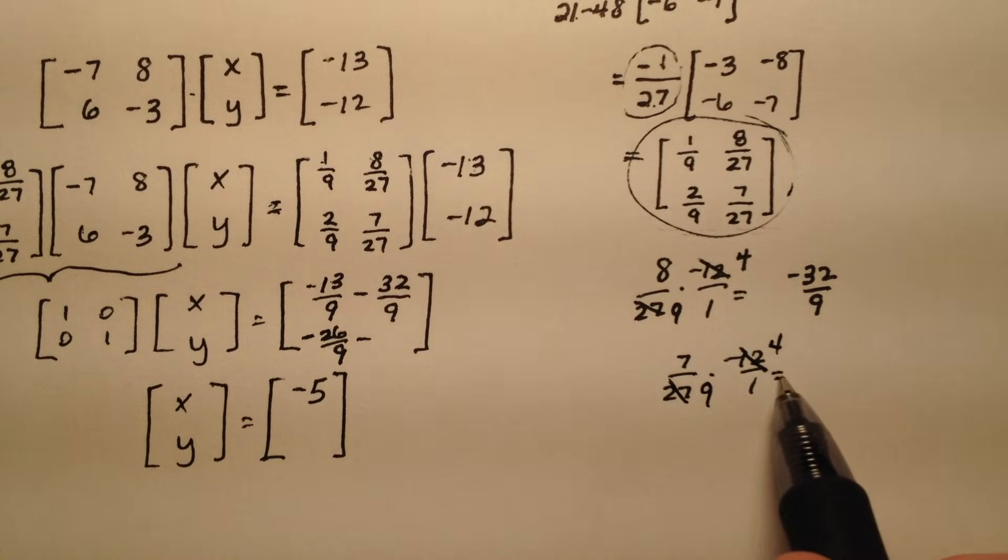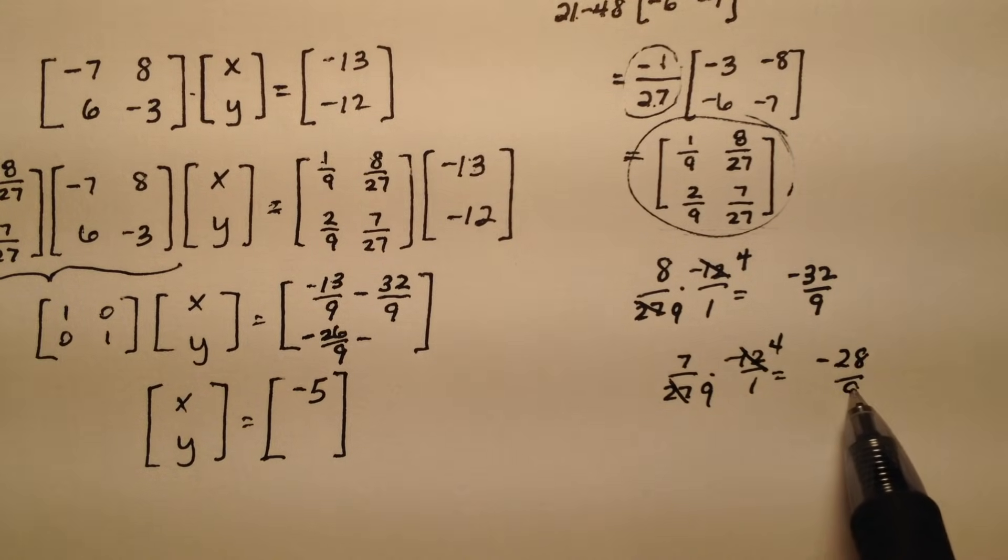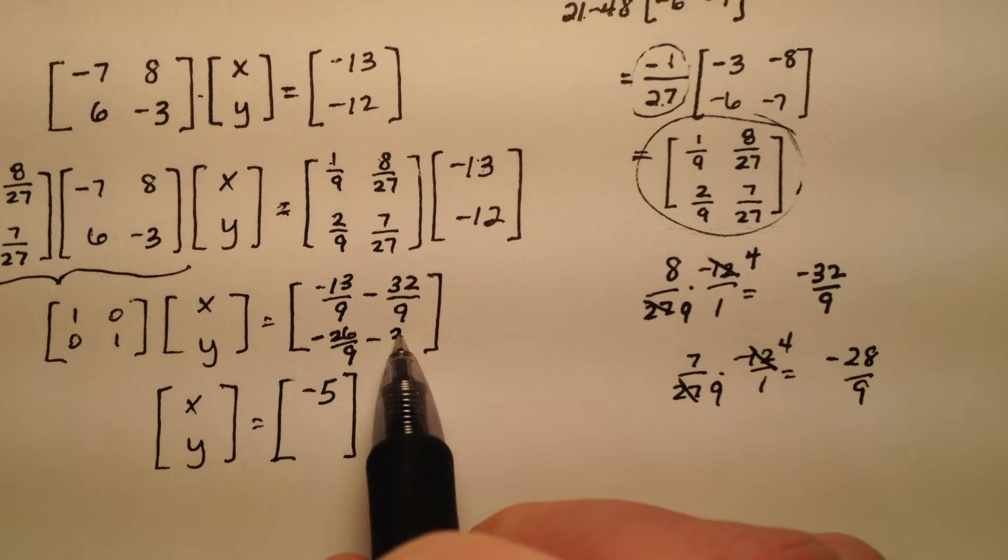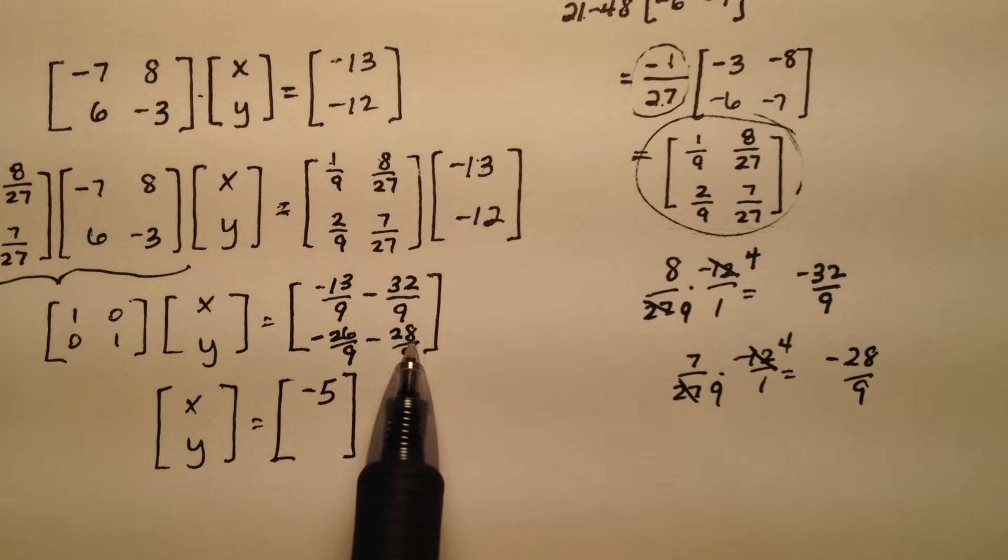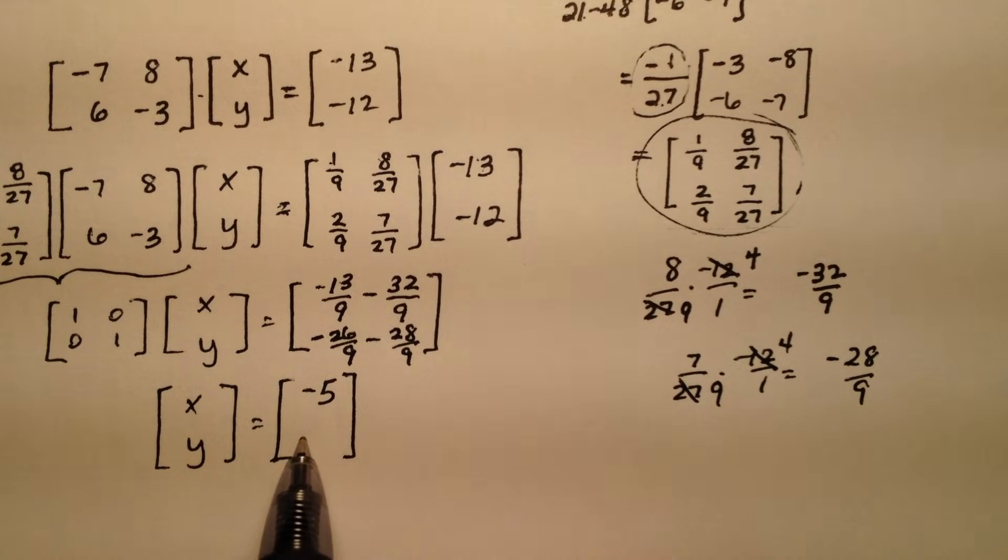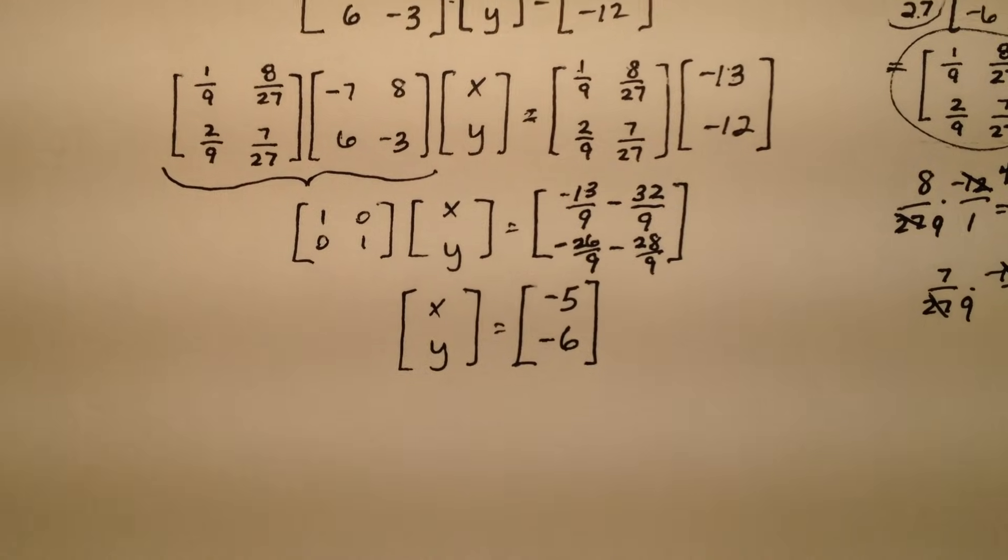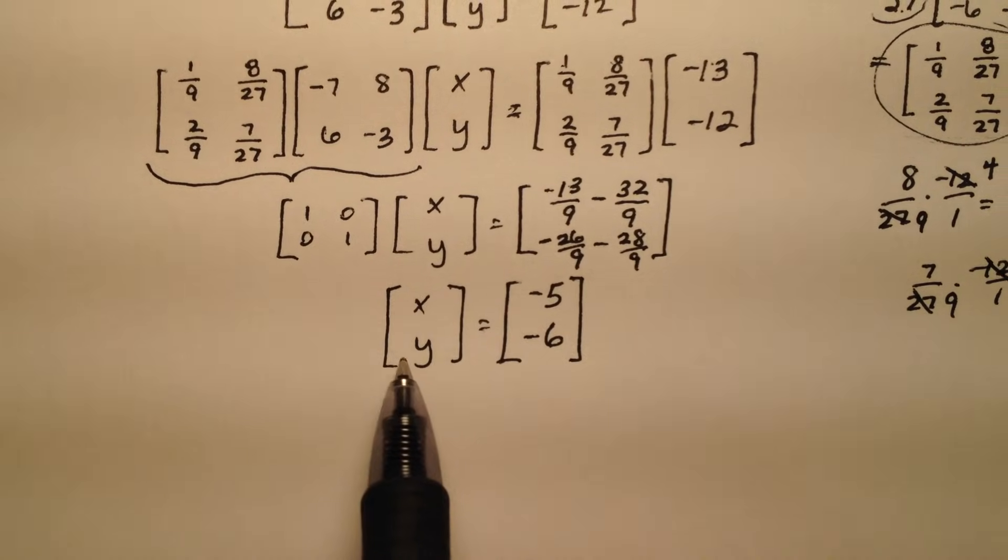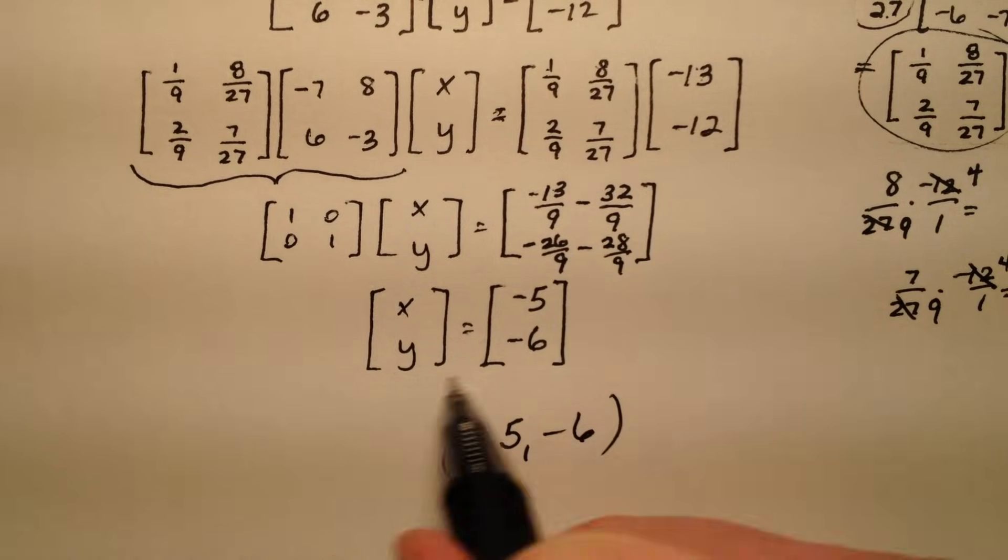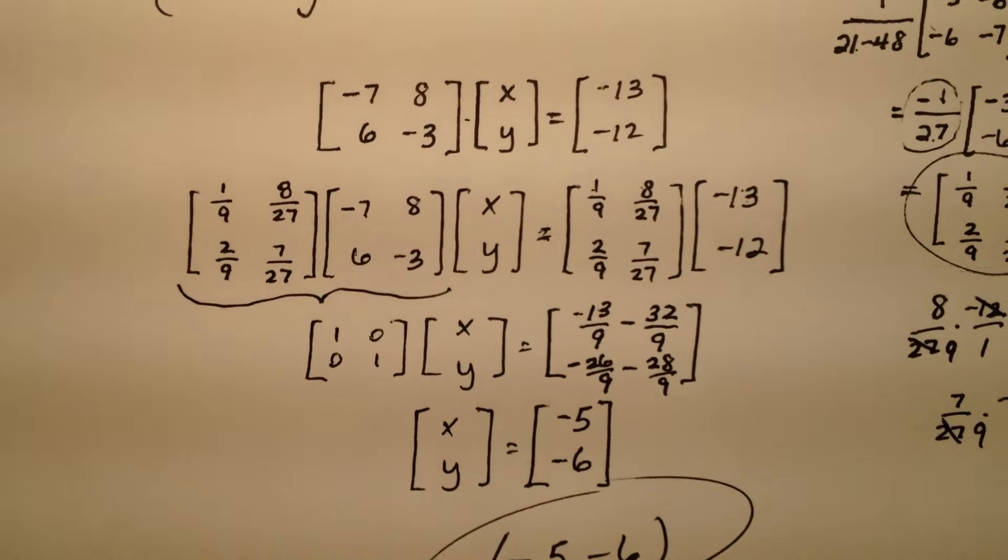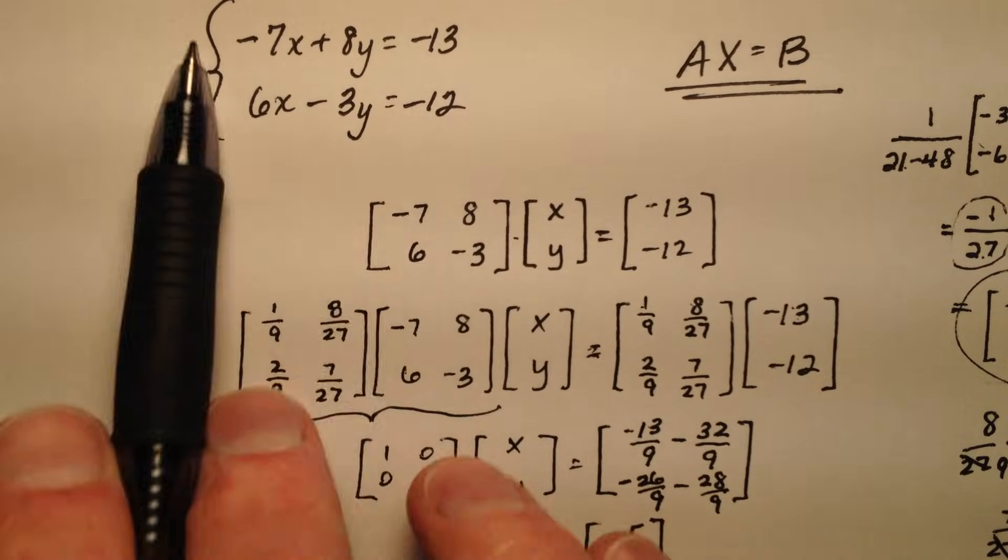This can go to a 4, this can go to a 9, so negative 28 9ths. So negative 26 and negative 28 are negative 54 9ths, so that's going to end up being negative 6. So the solution here, x equals negative 5, y equals negative 6. So my ordered pair is negative 5, negative 6 to solve this system of equations.